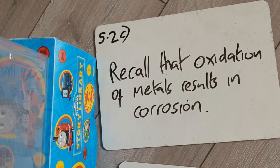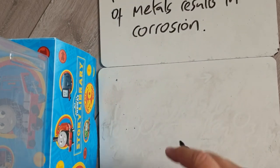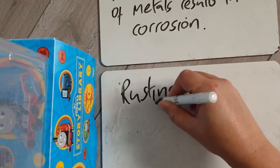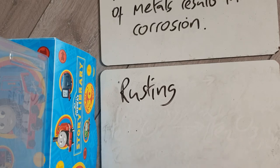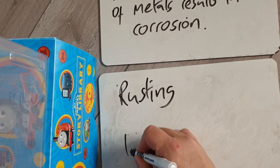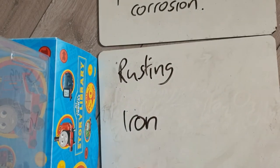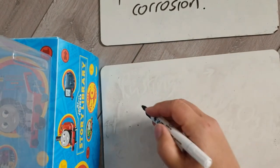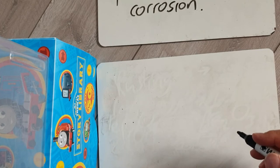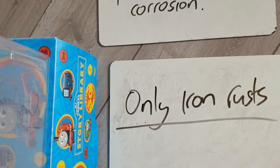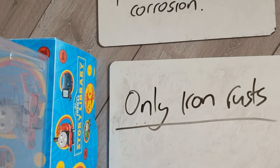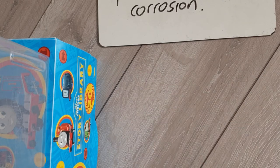Adding oxygen to metals causes corrosion. A special case is rusting — a very common everyday term. Rust is iron oxide, so iron is the only thing that rusts. It's acceptable to say copper, aluminium, or lead has corroded, but only iron rusts.